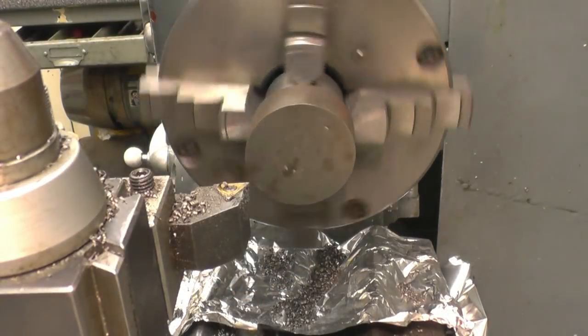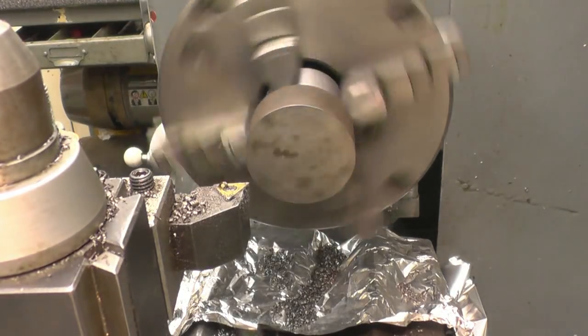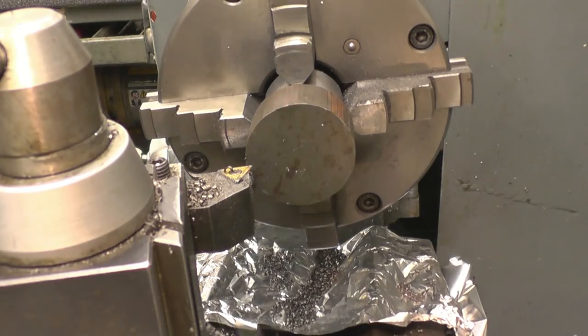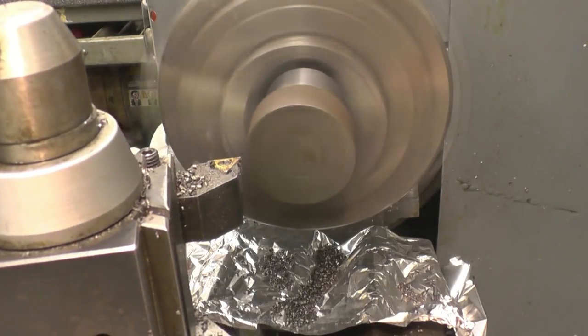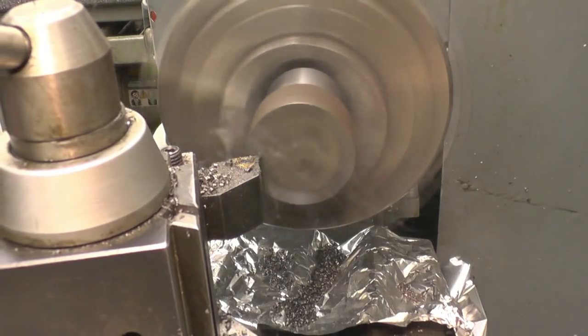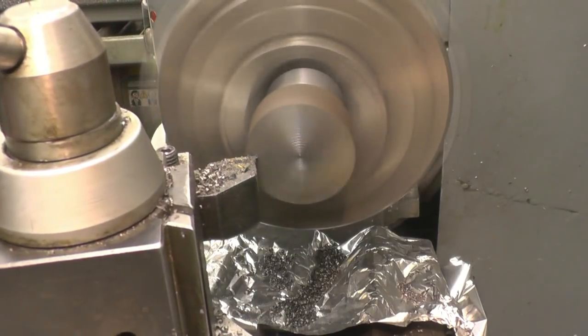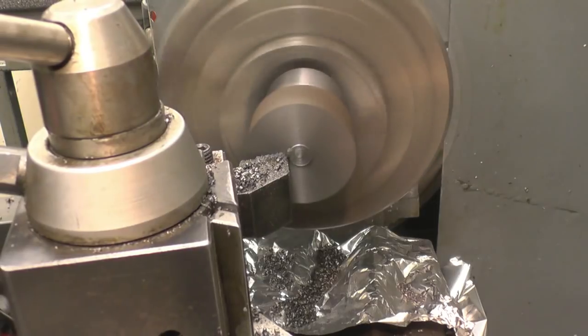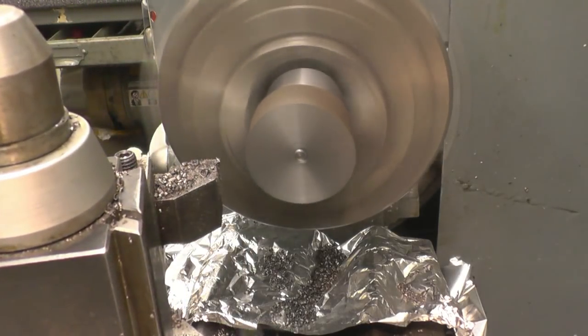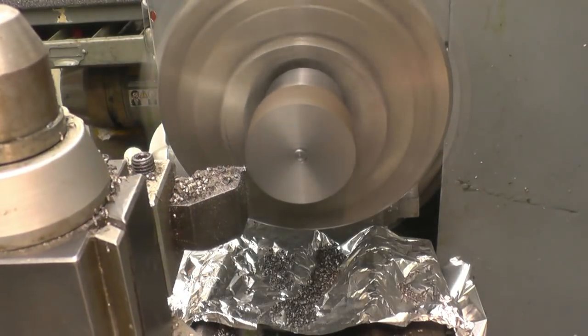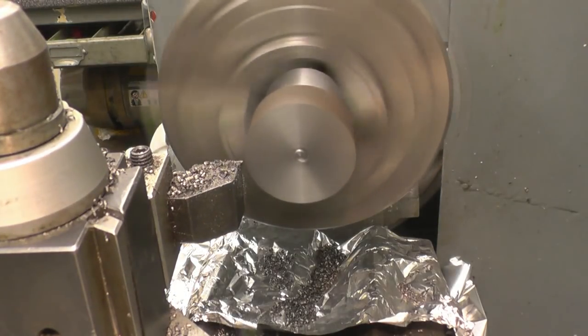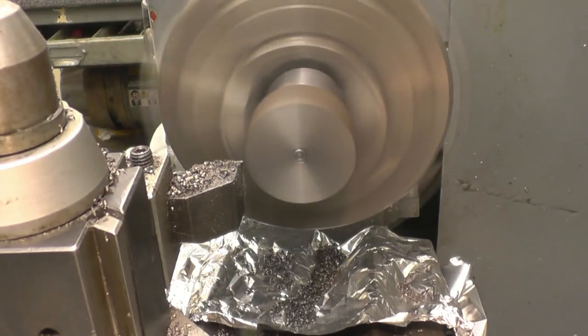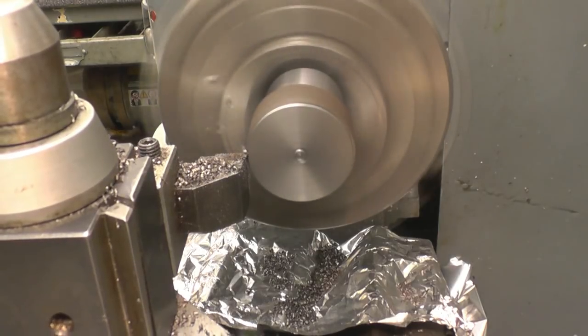At least we've got something to grip onto now. On this cast bar there's a hard skin on the outside. You've got to make sure you get underneath that and it won't cut.